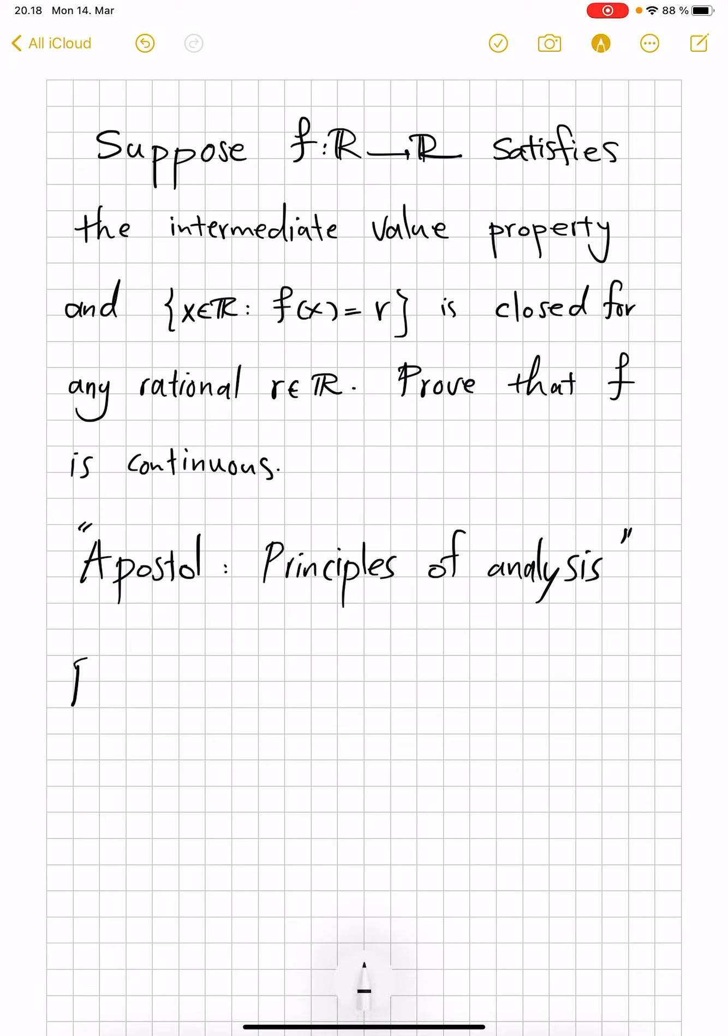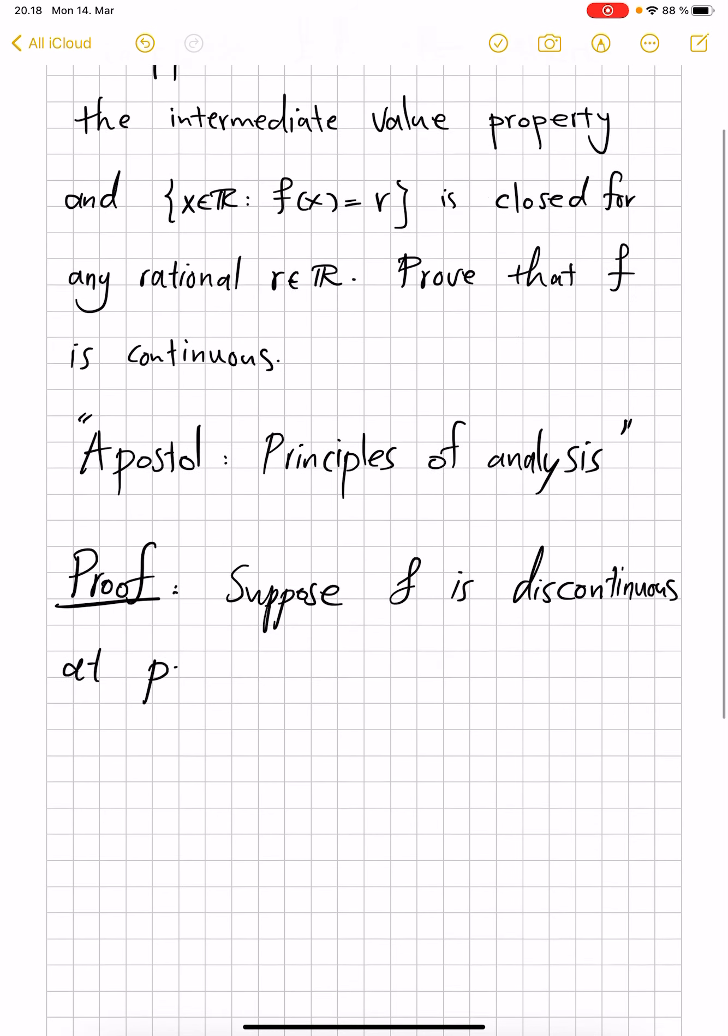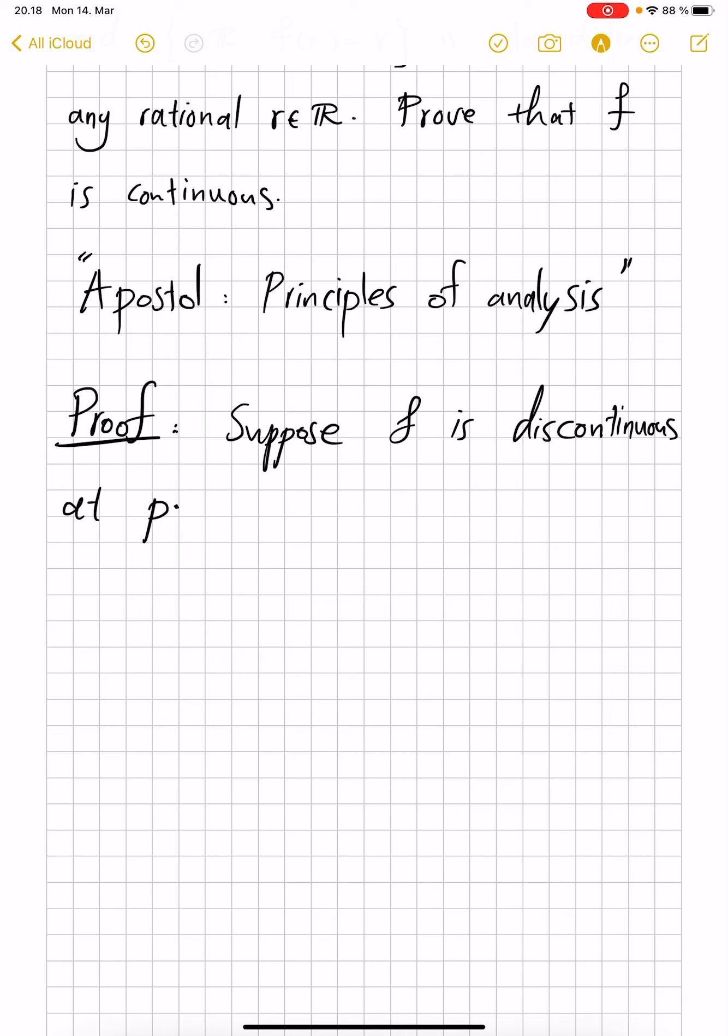Now, the proof, which is by contradiction. Suppose f is discontinuous at p. There are many ways a function can be discontinuous. Unlike a continuous function, there isn't one way of visualizing a discontinuity. However, there are two amazing notions that we love because they always exist, and that is the notion of lim sup and that of lim inf.